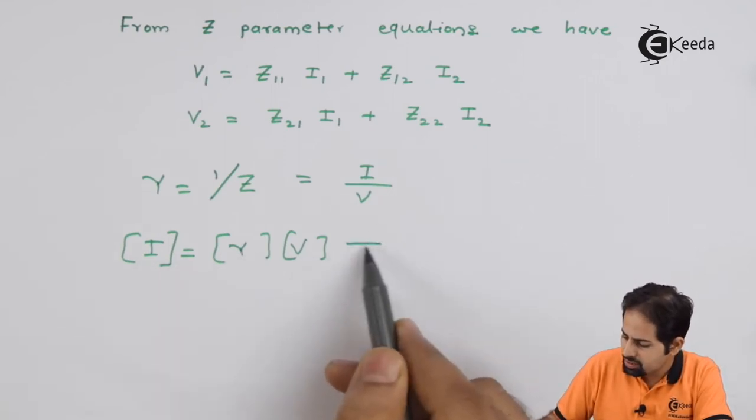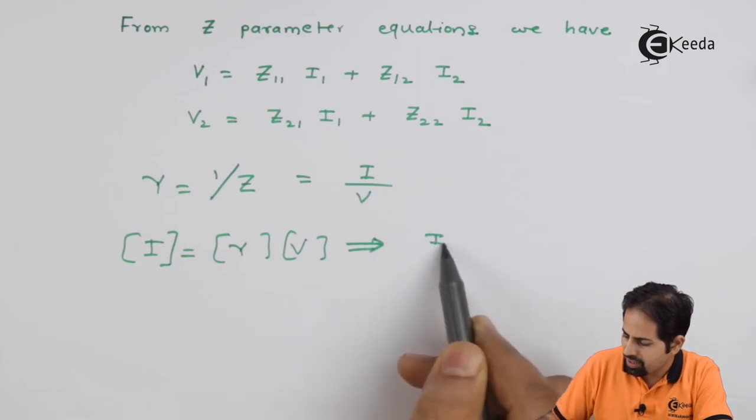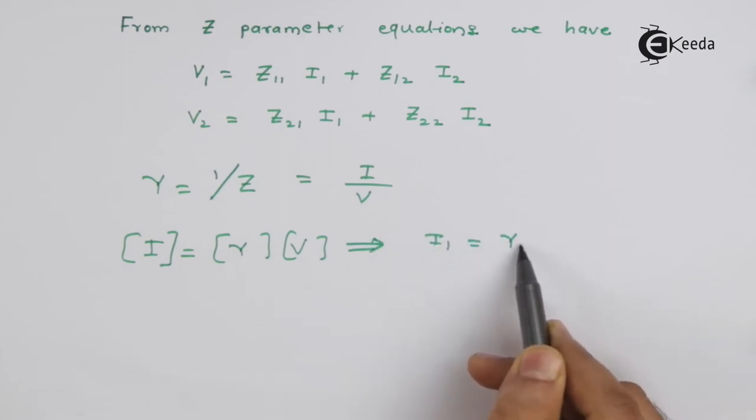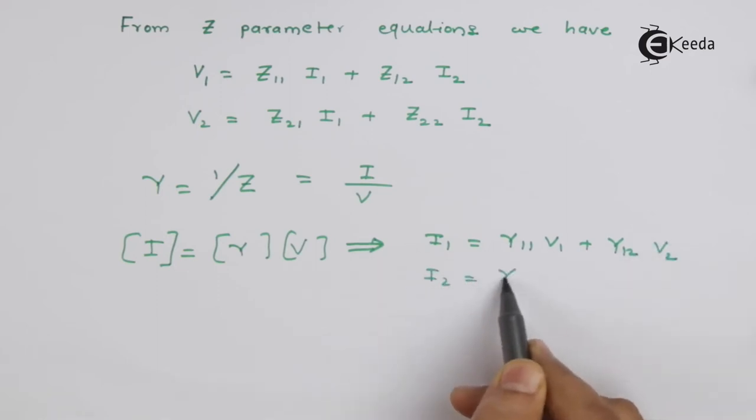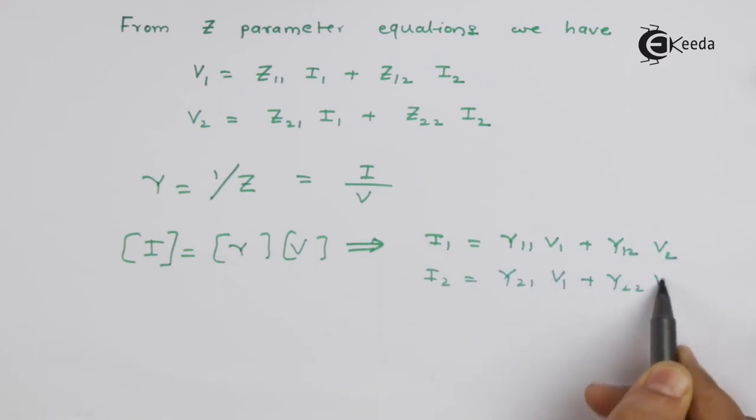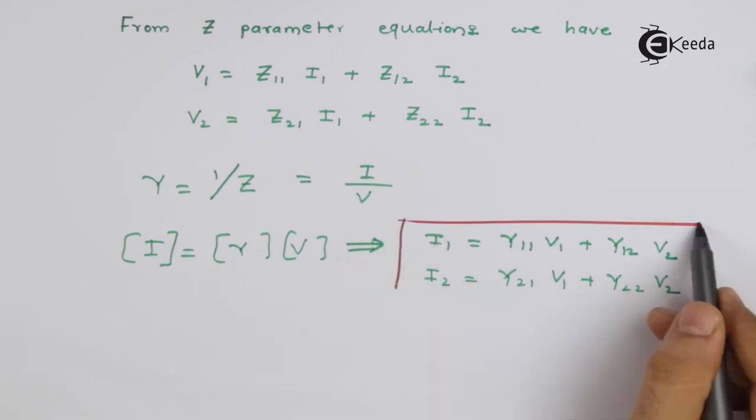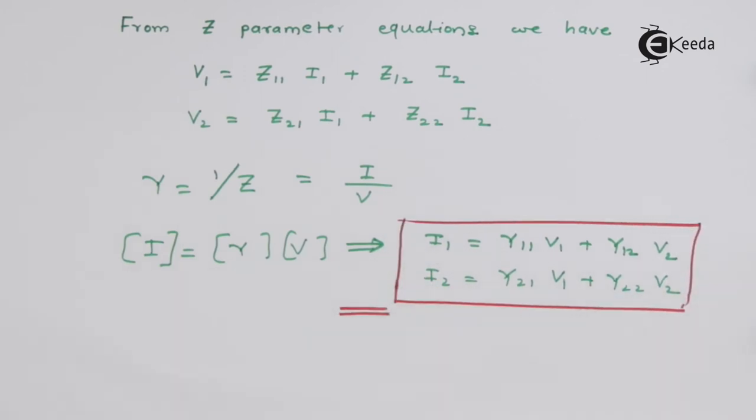So I is equal to Y into V. When we expand this, what we get is I1 equal to Y... So these are the equations of Y parameters.